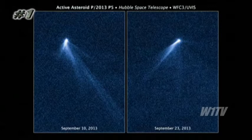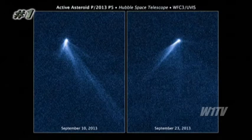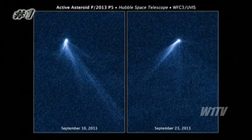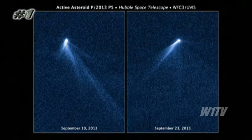It's got six tails going off around it, and we have never seen anything like it. We truly don't understand exactly what's going on here. But it underscores the idea that these tails we always associate with comets, we can also associate a little bit with asteroids.